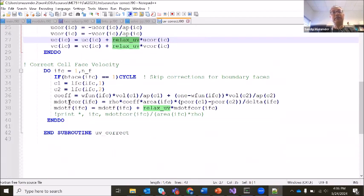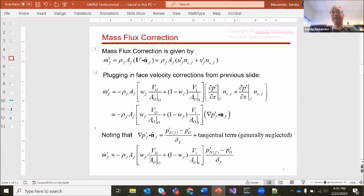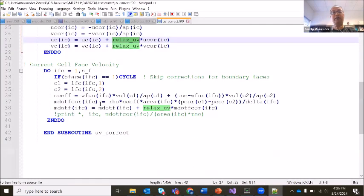Similar thing we do for the mass flux correction. And this is where we are using this expression here. So we have this quantity within square brackets in my code. I'm calling this coefficient. This is distance weighted interpolation of volume over a knot. And then finally, we multiply that by the density, the difference between the cell center pressures, pressure corrections rather, divided by the delta times the area.